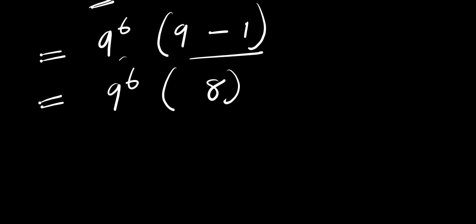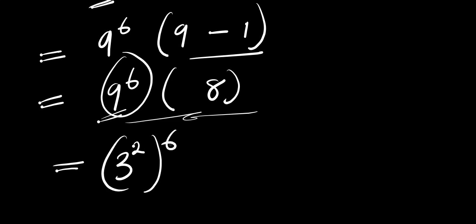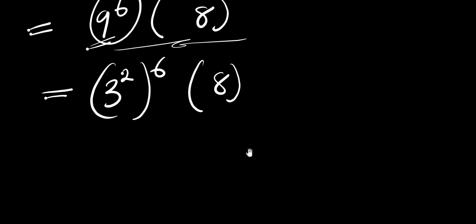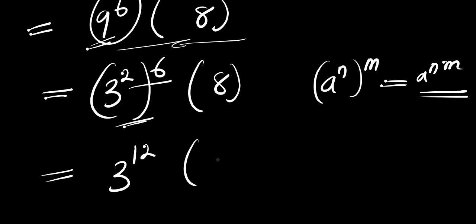So if we can find the value of 9 power 6, we can multiply that by 8 and we will have our final answer. Now, 9 is a perfect square — we can write it as 3 power 2, raised to the power of 6, times 8. We apply the identity (a^n)^m = a^(n times m), giving us 3 power 12 times 8.